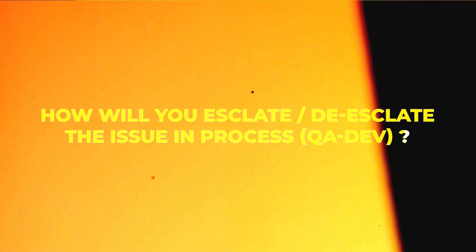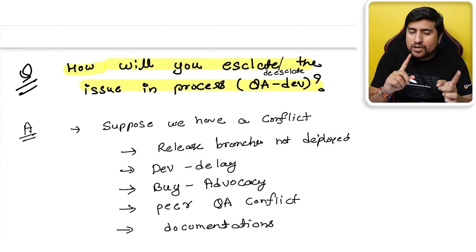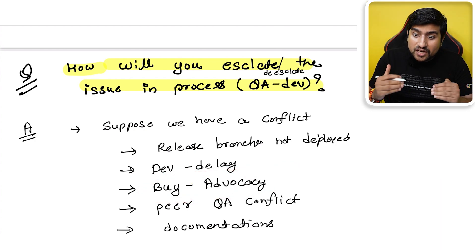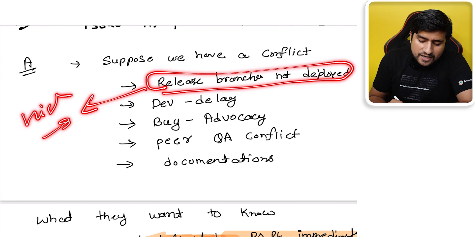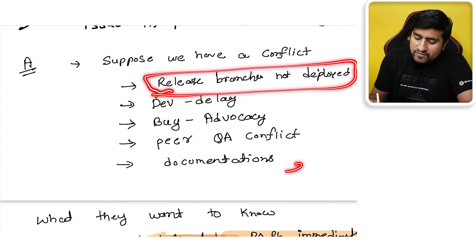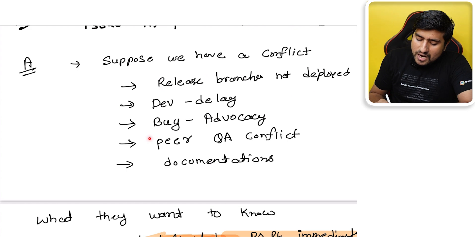The second question is: how will you escalate or de-escalate issues in the QA process? For example, if QA and dev have conflicts — release branches not deployed, dev delaying the project, bug advocacy where devs are not ready to accept bugs, or peer conflicts — how will you handle those? You escalate through Slack channels, email, or by notifying stakeholders.